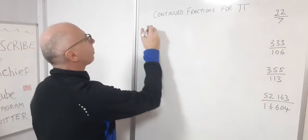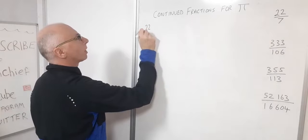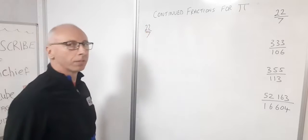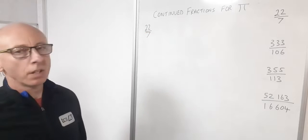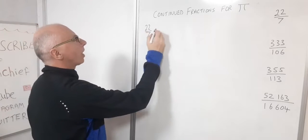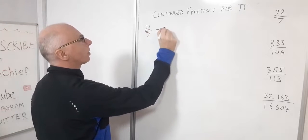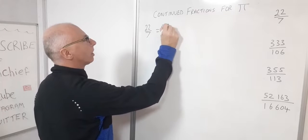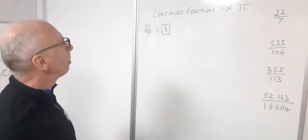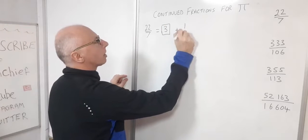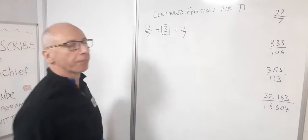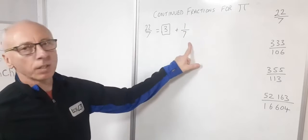So 22 over 7, let's look at that. When we're making this into a continued fraction, first thing we do is find out the integer. 22 over 7 gives us 3. Let's put that in a box, that's an important number, and then the leftover or remainder is 1 over 7. So that's that line complete.